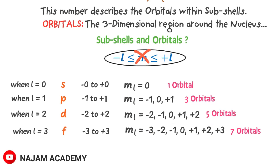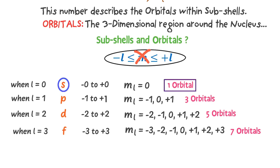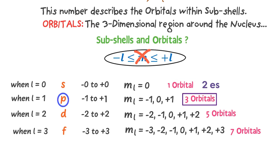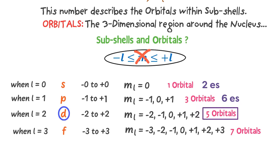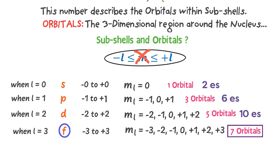Also remember that every orbital can hold only two electrons. S subshell has one orbital so it can accommodate two electrons. P subshell has three orbitals so it can accommodate six electrons. D subshell has five orbitals so it can accommodate ten electrons. F subshell has seven orbitals so it can accommodate fourteen electrons.